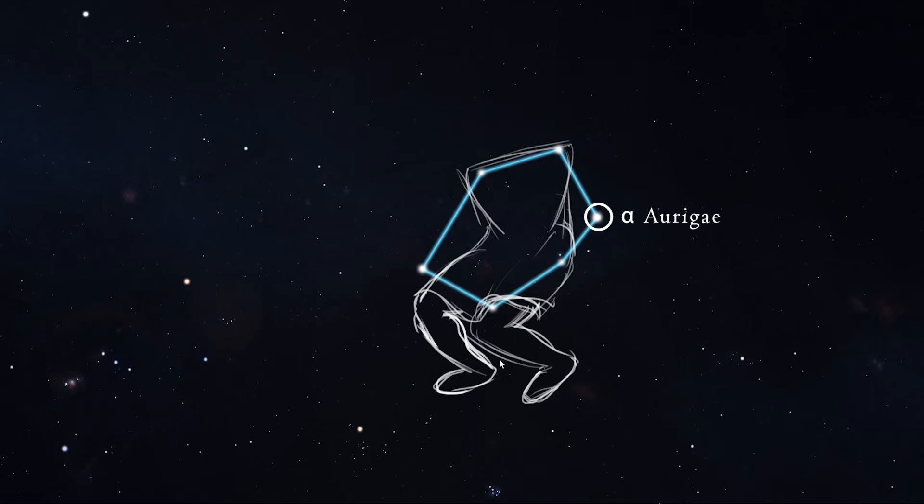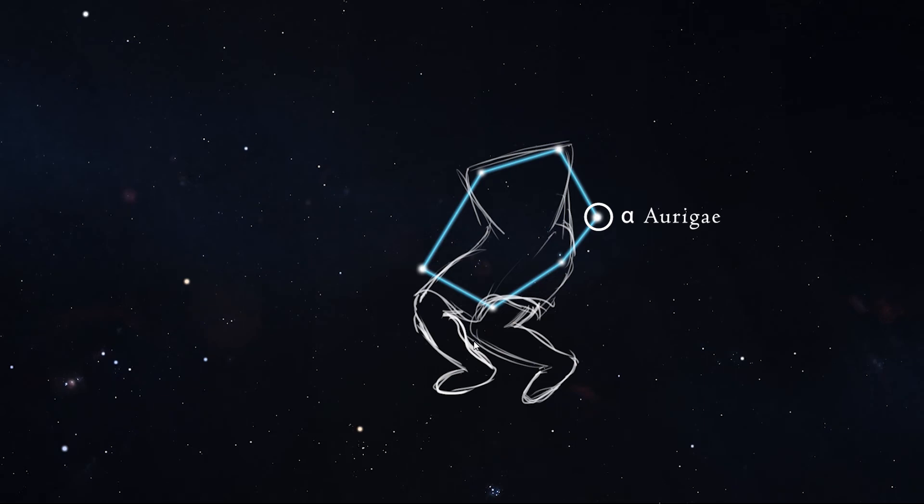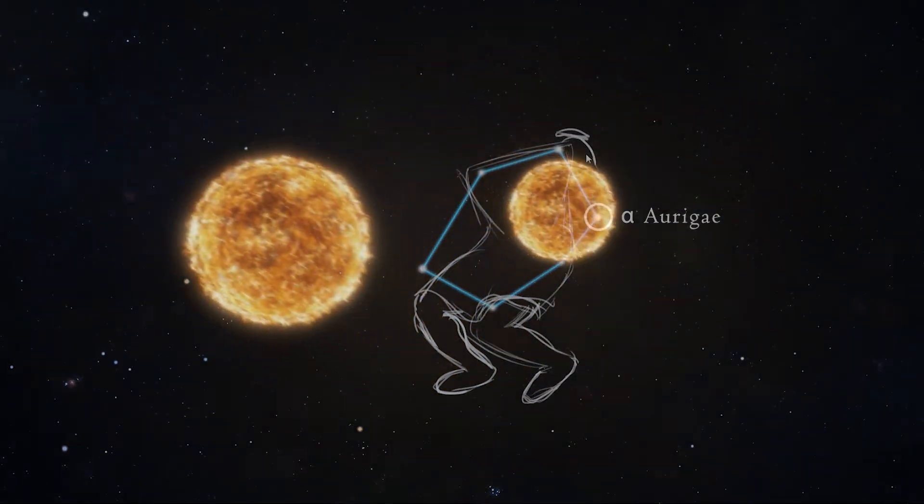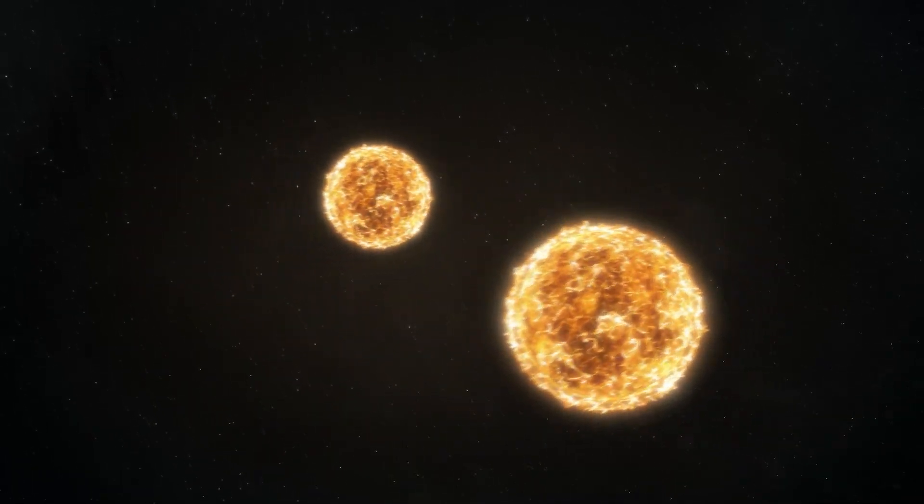Capella is about 42 light years away. Although it looks like one star to the naked eye, it has been identified as a quadruple star system made up of two binary pairs. Binary stars, of course, are made up of two stars that are close enough to share gravitational orbits.